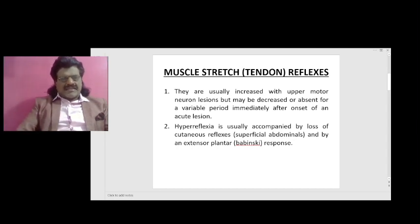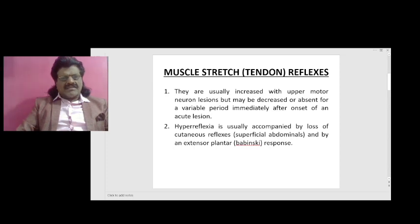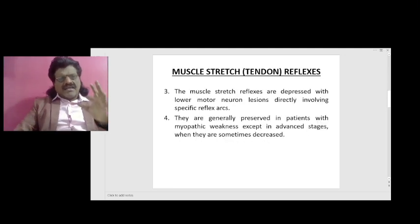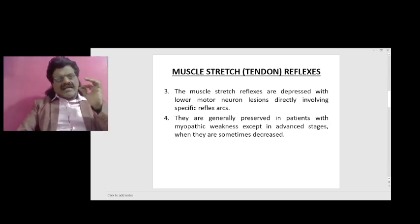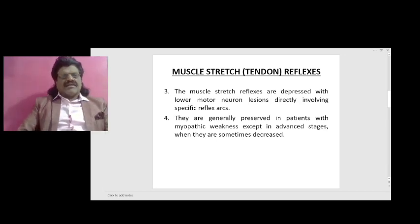So in an upper motor neuron lesion there is hyperreflexia, with loss of cutaneous reflexes — the superficial abdominal reflexes — and an extensor plantar response or Babinski sign. The muscle stretch reflexes are depressed with lower motor neuron lesions directly involving the specific reflex arcs. They are generally preserved in patients with myopathic weakness.